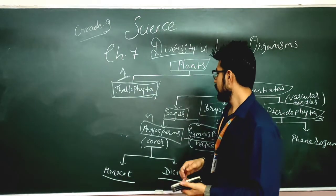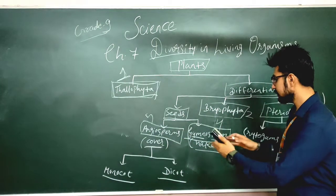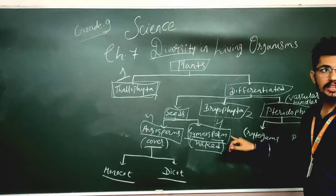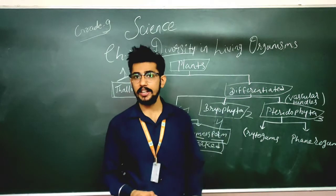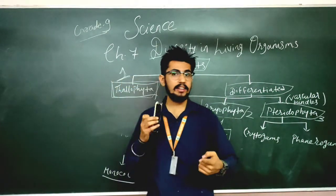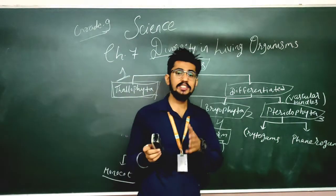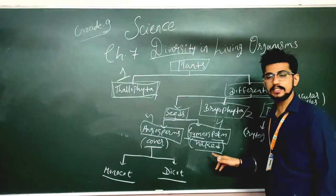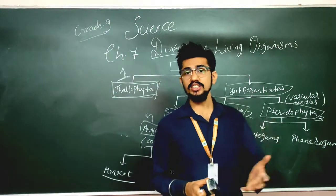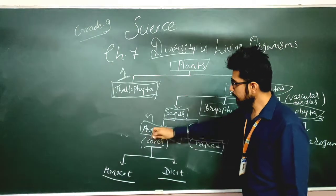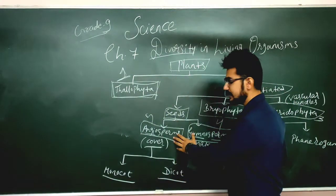We are going to continue with the next division, which is based on seeds. There are two divisions based on seeds: Angiosperm and Gymnosperm. The fourth division is Gymnosperm. Gymnosperm means naked seeds — 'gymno' means naked and 'sperm' means seed. Gymnosperm has all the features of Pteridophyta but also has seeds. However, the only thing missing in Gymnosperm is a seed cover. Angiosperm, which is the fifth division, has covered seeds — 'angio' means covered and 'sperm' means seeds.